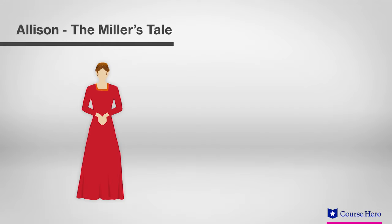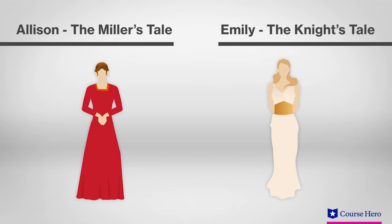Allison, a young beauty who agrees without much persuasion to have sex with Nicholas, is presented as a contrast to the virtuous Emily in The Knight's Tale. Social class is a point of contrast in this tale too. Two young men of the emerging middle class of clerks, scholars, and teachers compete for her love.